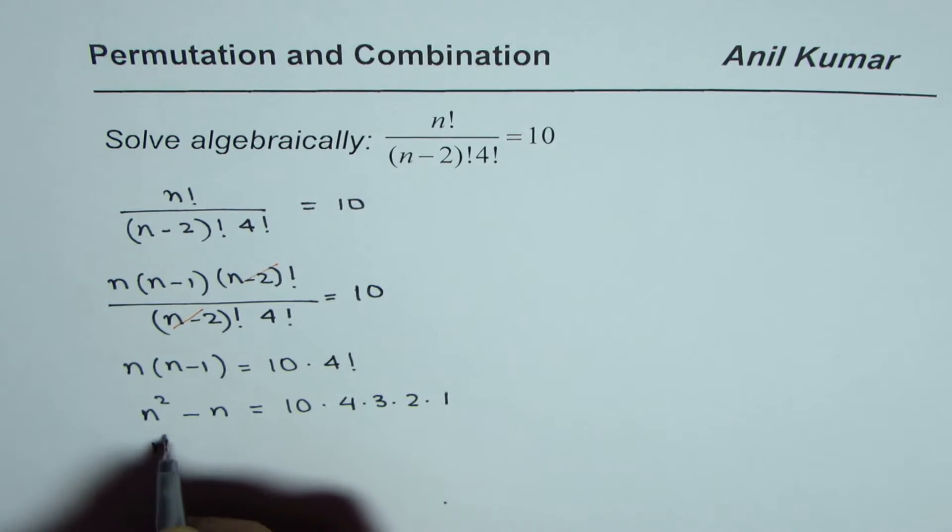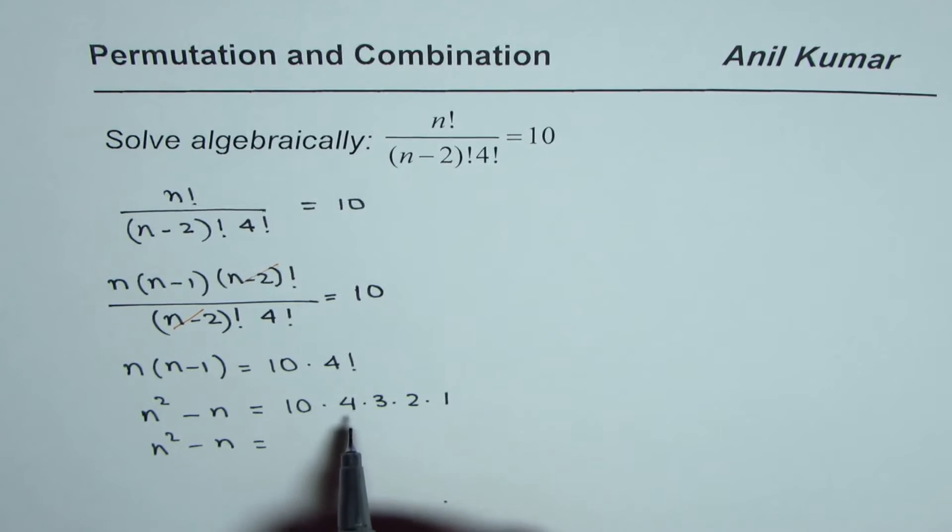That gives you n square minus n equals to 4 times 3 is 12, 12 times 2 is 24 times 10 is 240.